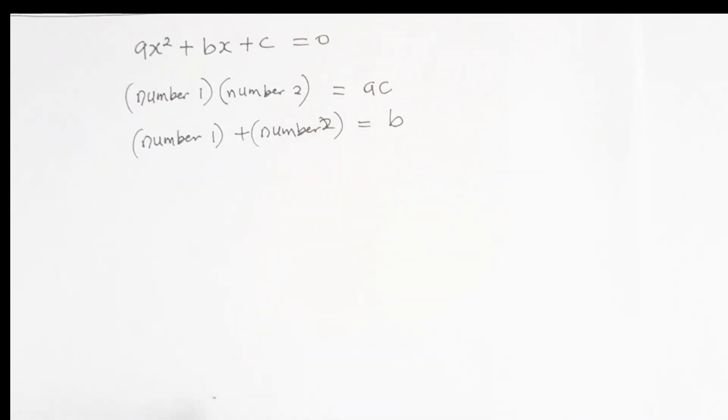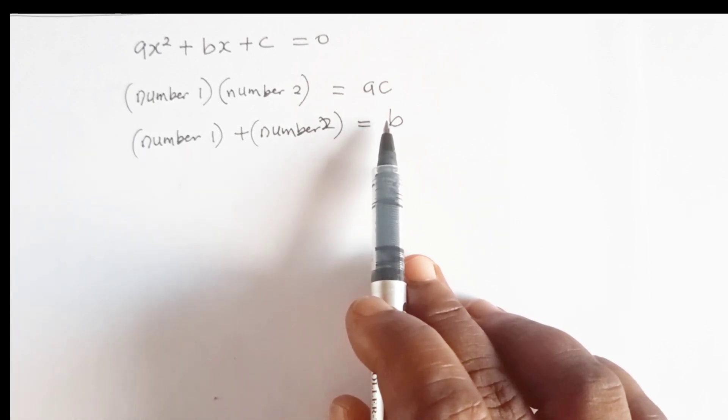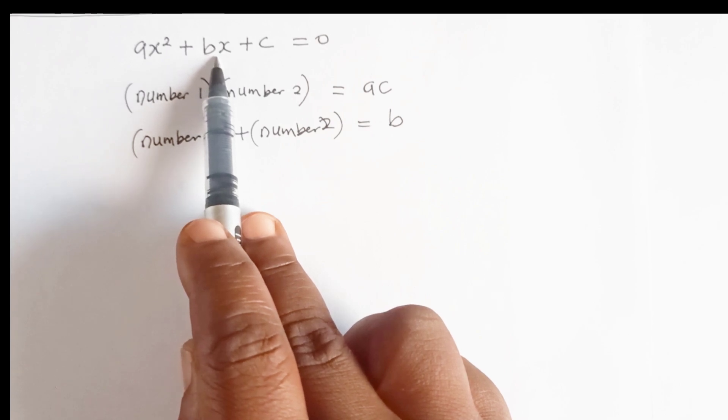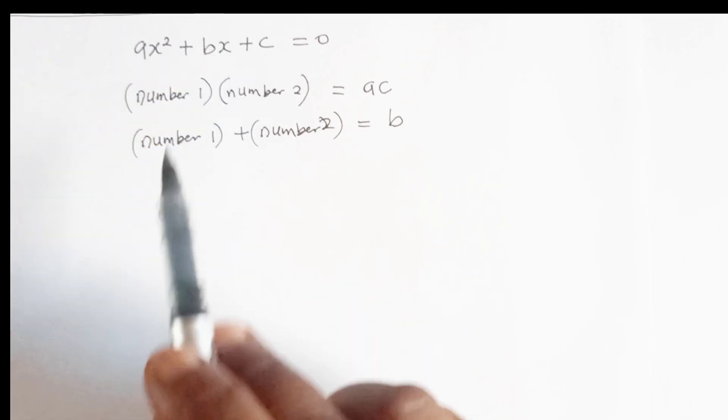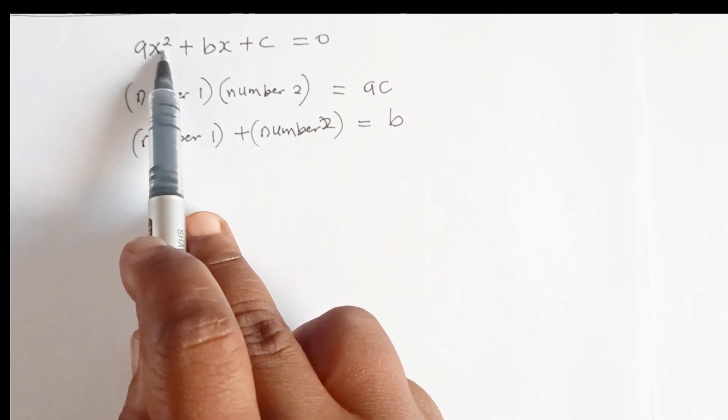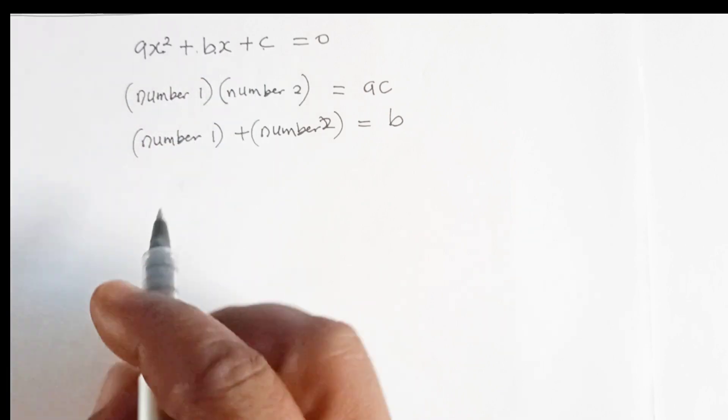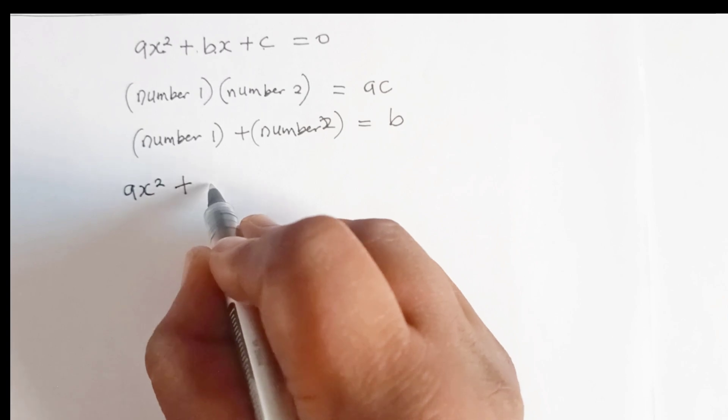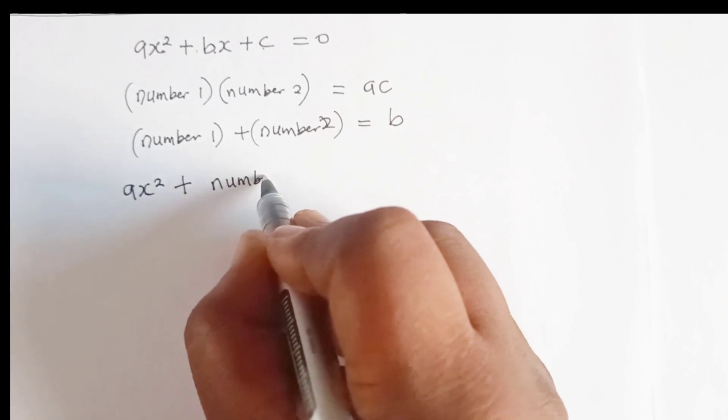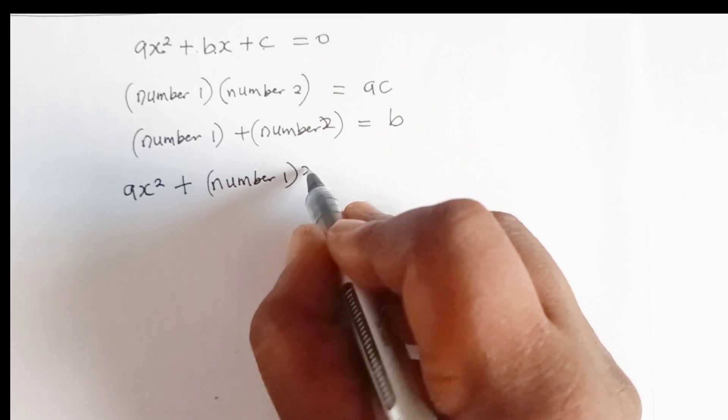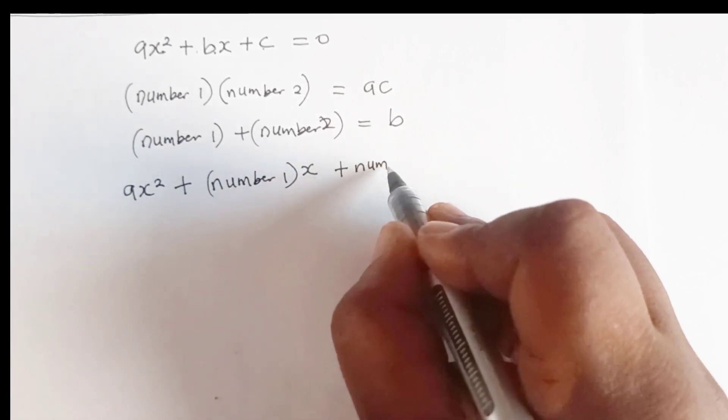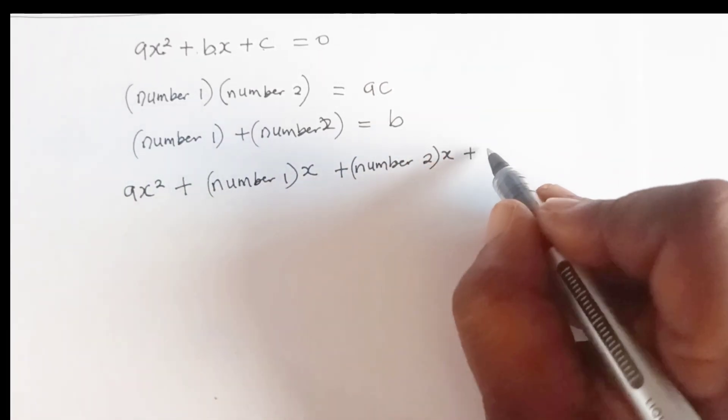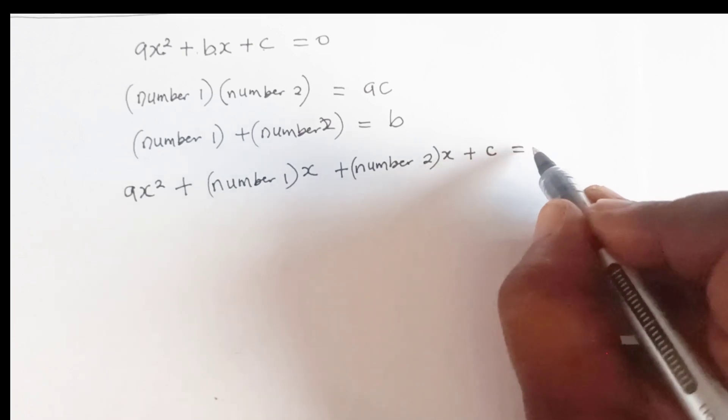After that, when we have found those two numbers, we will split the middle term using these two numbers. We will write ax squared plus bx plus c as ax squared plus the first number, number 1 multiplied by x, plus number 2 multiplied by x, plus the constant equal to zero.